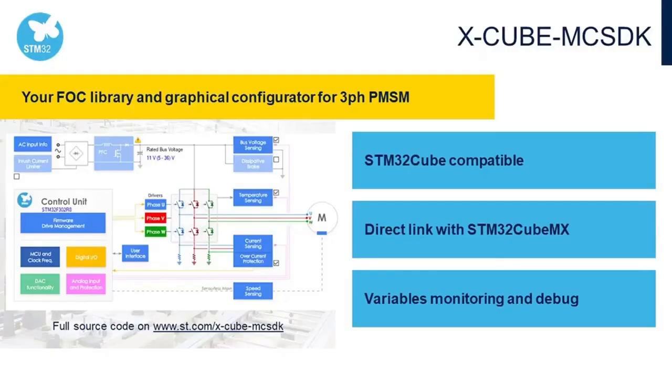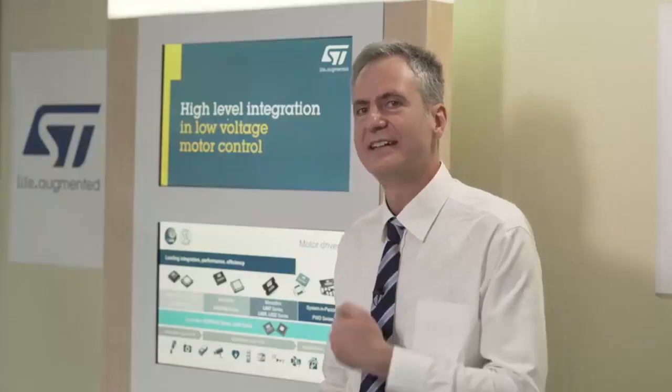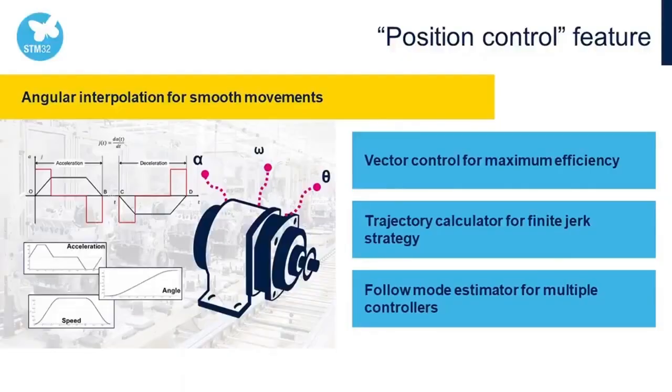The firmware has a trajectory calculator that defines the instantaneous value of angular speed, position, and acceleration to implement a finite jerk strategy. The jerk is the derivative of the acceleration.